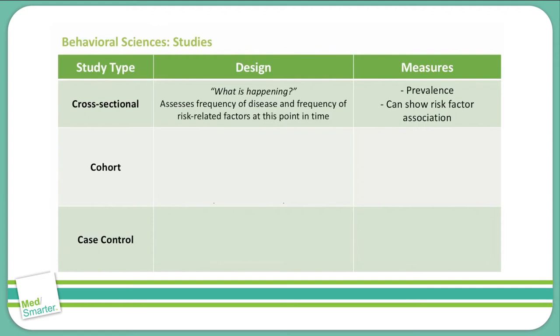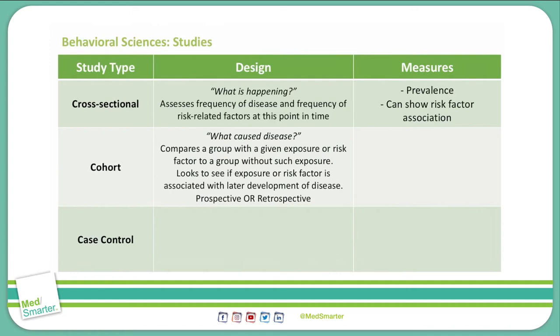Cross-sectional studies measure prevalence. They can show a risk factor association with the disease, but they don't establish causality.